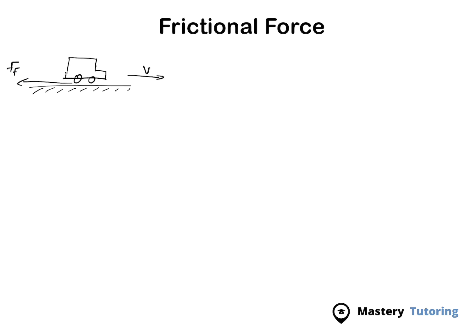Frictional force acts in the opposite direction of motion. Think about an object moving to the right, and now another one moving to the left. Because the velocity is to the left, frictional force will be acting on the contact surface to the right. Frictional force is always acting opposite to the direction of motion.